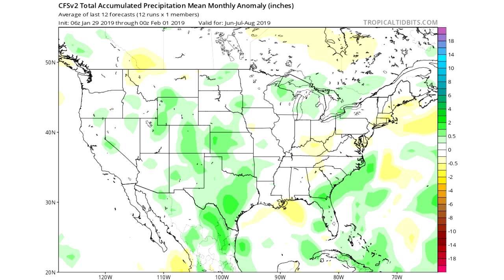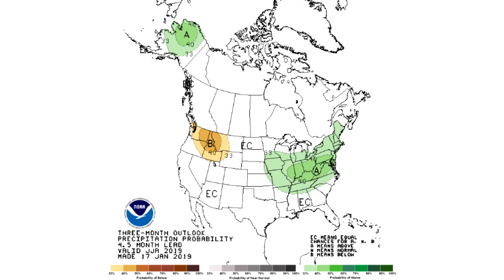Moving on to model guidance, it's kind of the opposite — splattered all over the place with greens and yellows everywhere, but it has the southeastern United States in the above-average precipitation area, which is the opposite of the analogs. This is what I'm talking about — we don't really have a lot of confidence here, not a lot of agreement, so the precipitation forecast is not too confident.